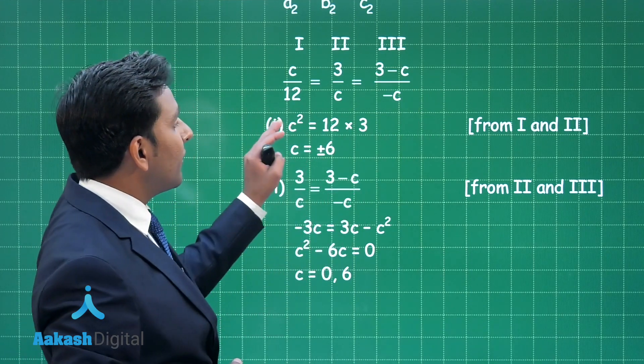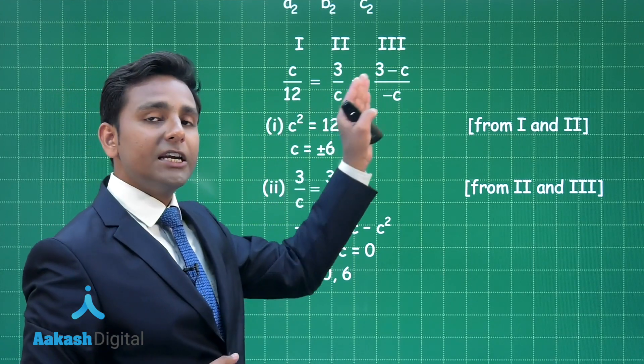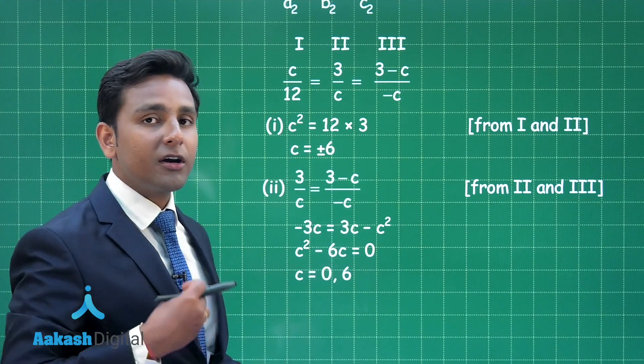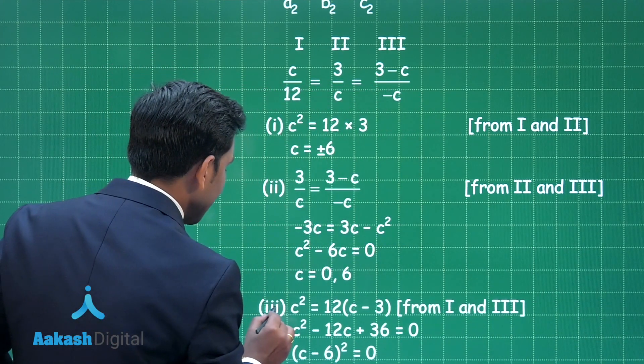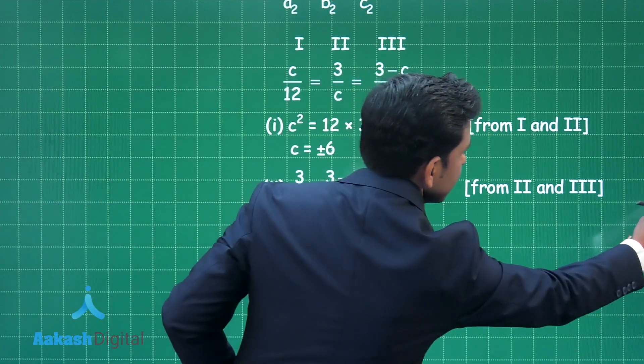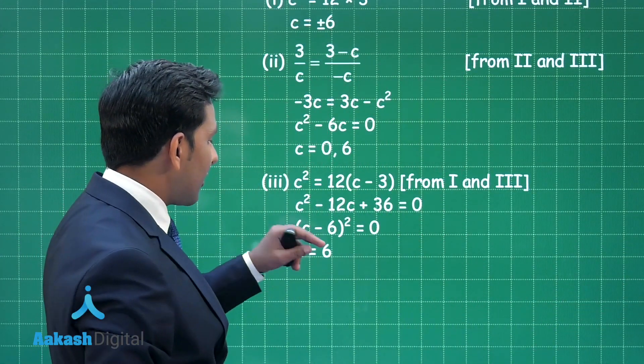Now we are taking first and third ratio into the consideration. That means C upon 12 is equal to 3 minus C divided by minus C. And after cross multiplication you will obtain the value of C equal to 6.